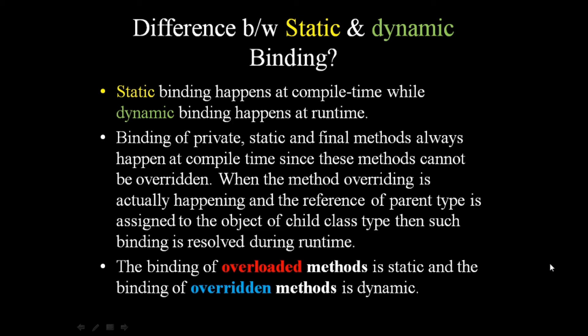Now we will discuss the difference between static and dynamic binding. Static binding happens at compile time, while dynamic binding happens at runtime. Binding of private, static, and final methods always happens at compile time, since these methods cannot be overridden.